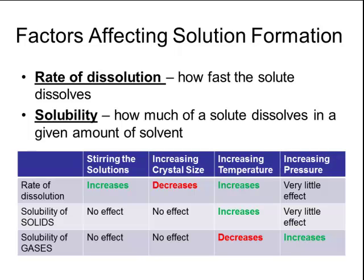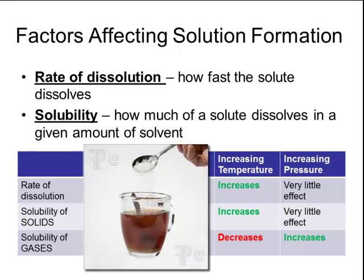However, the solubility of gases is different. If you increase the temperature of the solvent, less gas can actually be dissolved in it, whereas making the solution colder will increase the solubility of the gas. You've probably noticed these effects on solubility in your daily life. For example, if you dissolve sugar in hot tea, as the tea begins to cool down and reach room temperature, you may notice that small crystals of sugar settle at the bottom of your cup. That's because as you decrease the temperature of the solution, the solubility of the sugar also decreases.